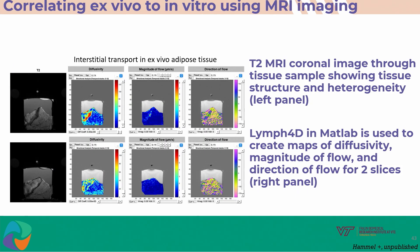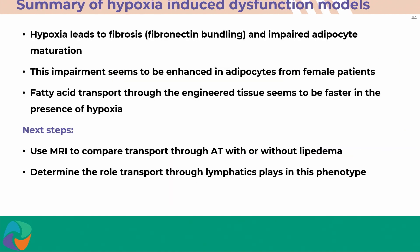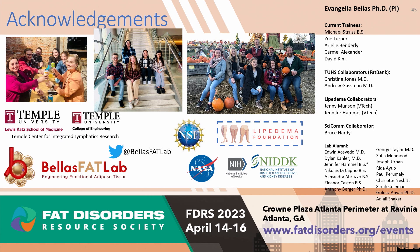We are now using this information to build out our ex vivo and in vitro MRI imaging, done at Virginia Tech with our collaborators. We're using this on adipose tissue to track how these tissues have different patterns of diffusivity, flow, and direction of flow. Thank you to our team and our funders for supporting us.